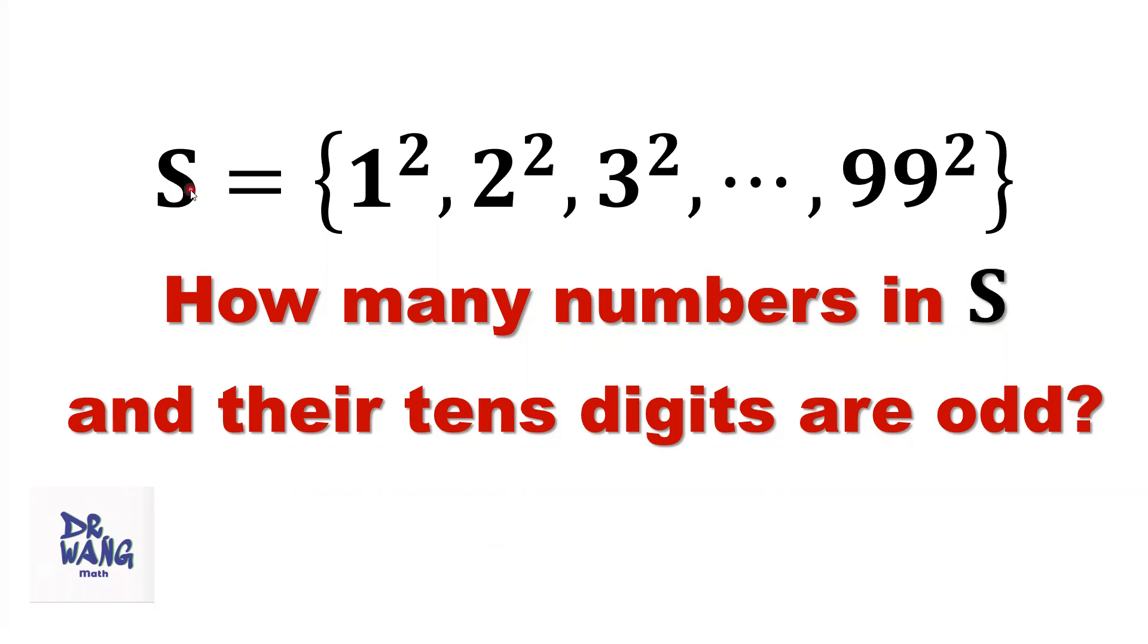If set S equals 1 square, 2 square, until 99 square, the question is how many numbers inside of this S such that their tenth digits are odd.